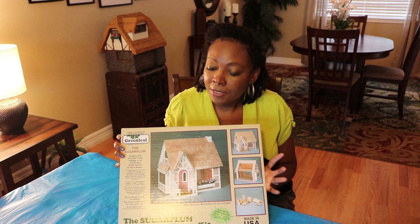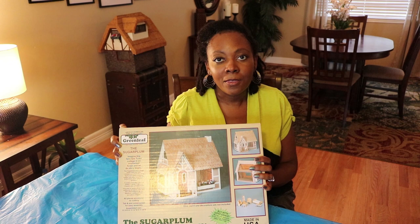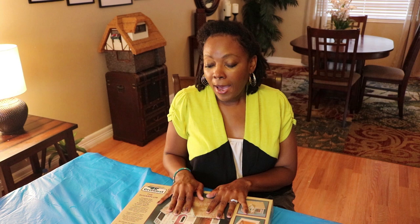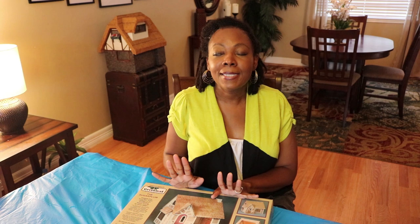The kit that I'm using is the Greenleaf Sugar Plum. This is a very easy kit to build so if you're new to dollhouses then this is a good one to start with. This video is only showing you how to assemble the shell. I will show you how I customize my dollhouses with things like stone, stucco, landscaping in separate videos. So let's get started.